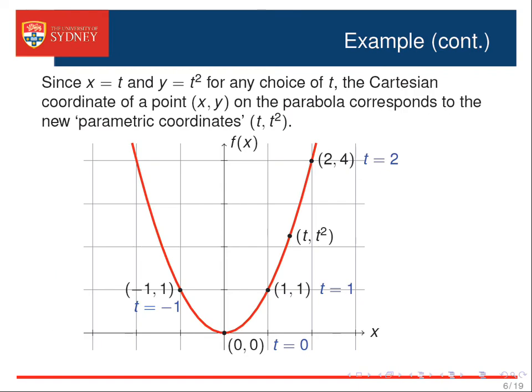Moreover, since x equals t and y equals t squared for any choice of t, the Cartesian coordinate of a point x, y on the parabola corresponds to the new parametric coordinates t, t squared. Indeed, by letting t run through all the real numbers, the coordinate t, t squared will trace out the exact same parabola as y equals x squared.